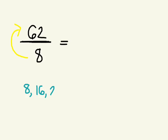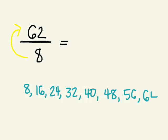8, 16, 24, 32, 40, 48, 56, 64. Good. We'll stop there because we know that we're taking 62 and dividing it by 8.